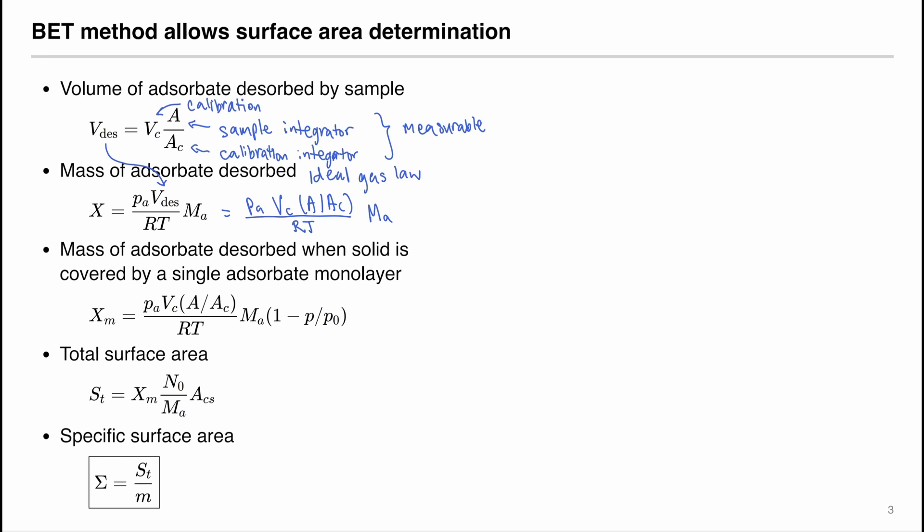Remember on the last page, we determined that the mass of the adsorbate desorbed when the solid is covered by a single adsorbate monolayer, x of m, equals x multiplied by one minus p divided by p zero. And since we have solved for x, we can plug it in to get x of m.